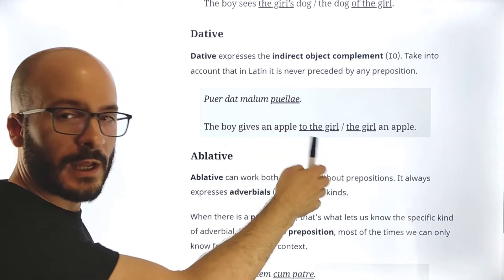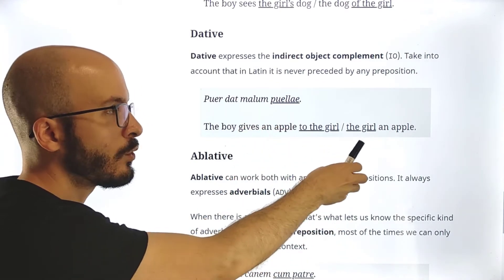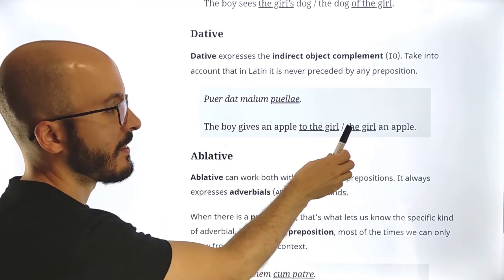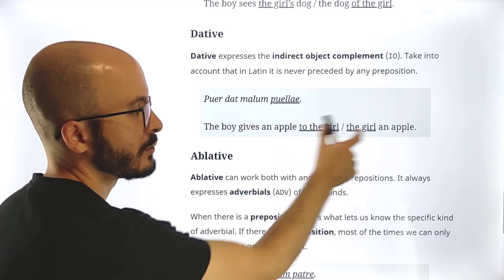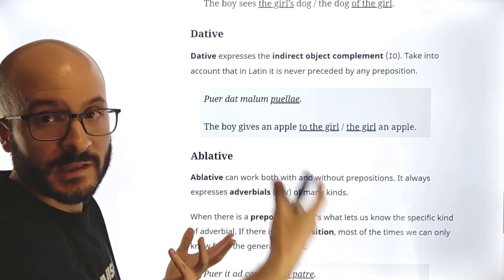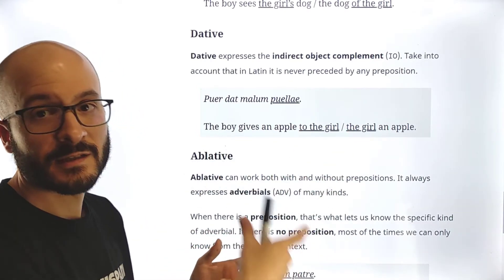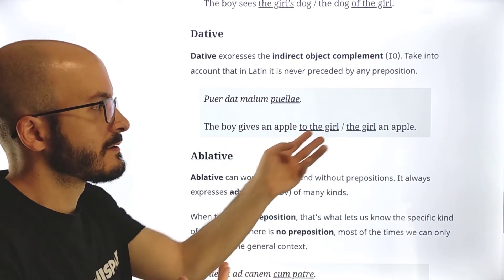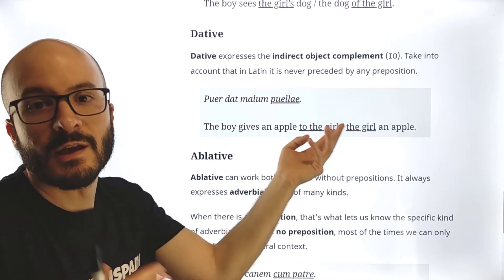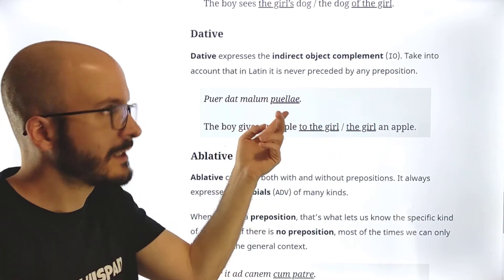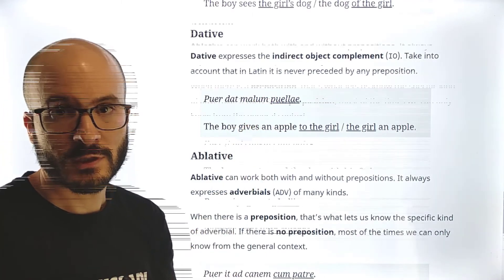So here we see that in English we have a preposition. In Latin we never have a preposition. But also, depending on how we say it in English, in English we might not need the preposition. So for example, the boy gives the girl an apple. Of course, these two options are the same. Just one option needs the preposition, the other option doesn't need the preposition. This is not about Latin, this is about English. But in Latin, which is what we are actually studying, dative never has a preposition.